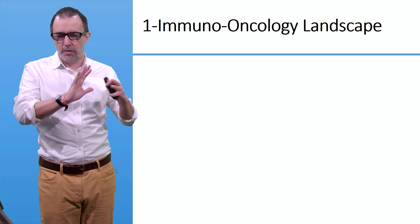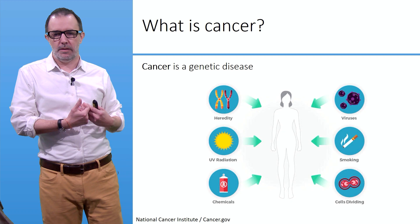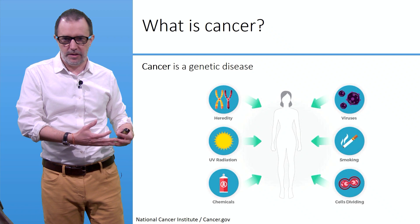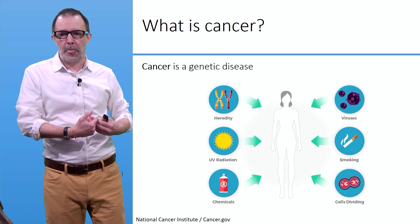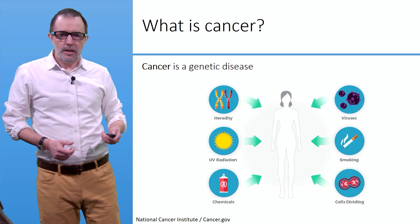Let's start with a broad overview of the immuno-oncology landscape. What is cancer? Cancer is a genetic disease. These genetic alterations can come from hereditary sources, from diseases, from infection, from exposure to chemical UV radiation, and of course from regular cell division that takes place during life, where at each division some mutations in the DNA accumulate.